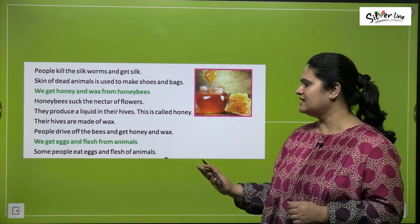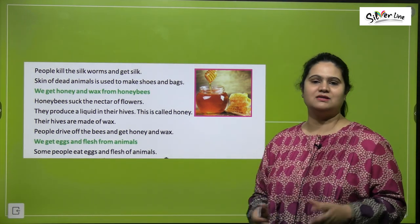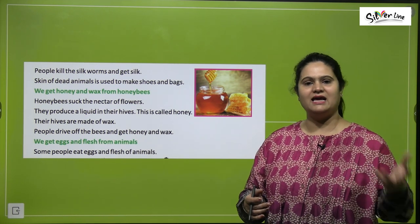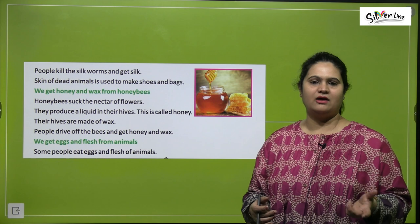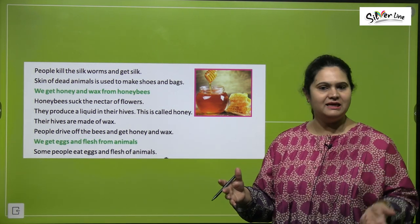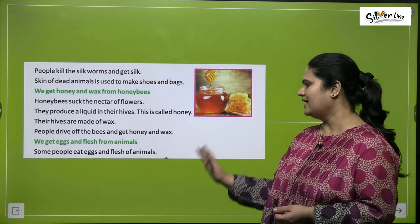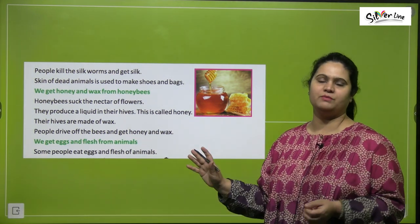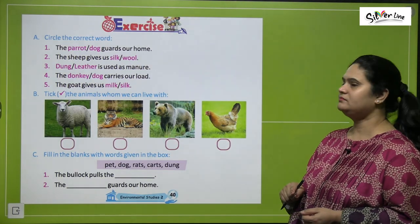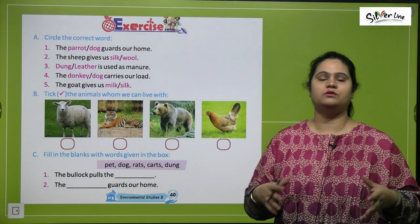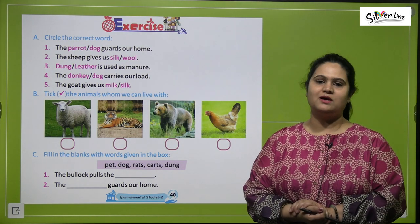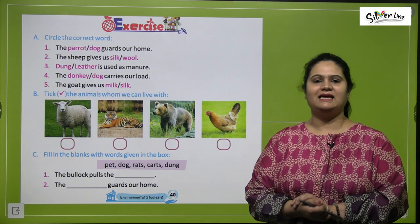We get eggs and flesh from animals. Animals' eggs are eaten by us, and their flesh is also eaten as meat. So we get eggs and flesh from animals.